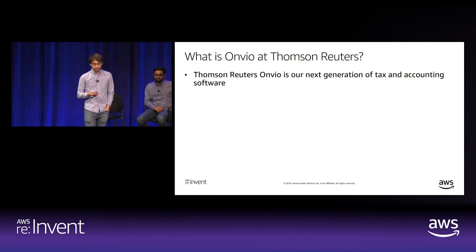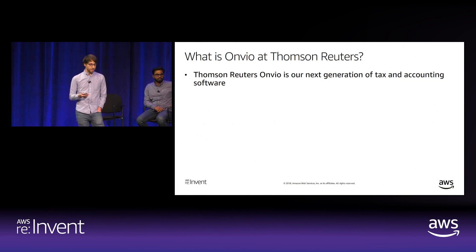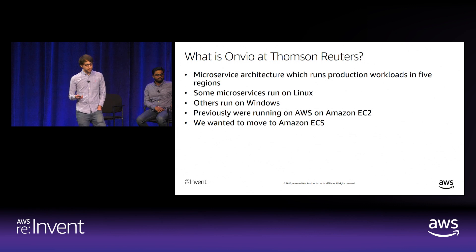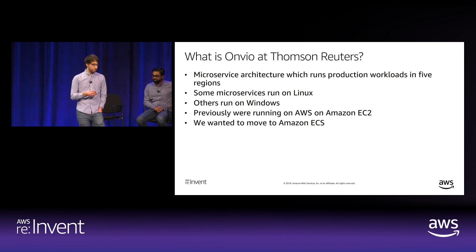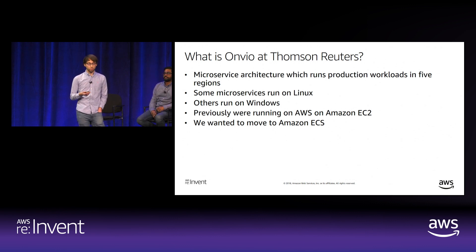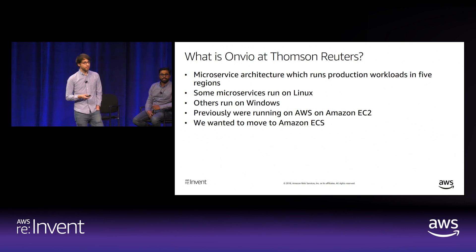Our story begins with a Thomson Reuters product called Onvio—Thomson Reuters' next generation of tax and accounting software. It's a suite of cloud-based products for accounting firm operations. Behind the scenes, Onvio consists of many microservices running production workloads in five different regions on AWS. Some microservices run on Linux, but others were written for Windows. Previously these were running on EC2, but we decided to migrate them to Amazon ECS.